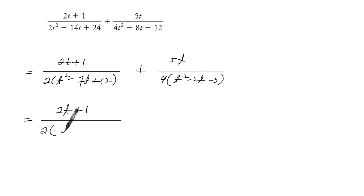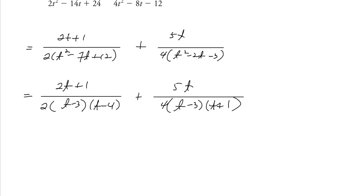It's t minus 3 and t minus 4. This is t minus 3 and t plus 1. So they do have this in common. So that can be just repeated once by everything else.